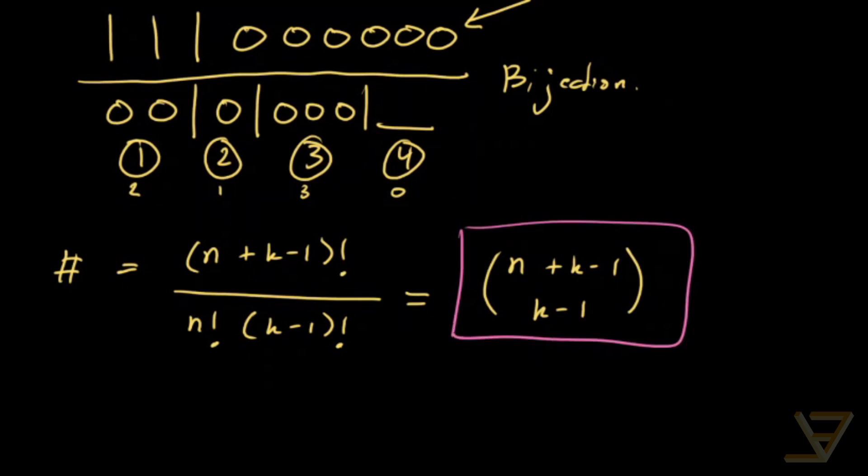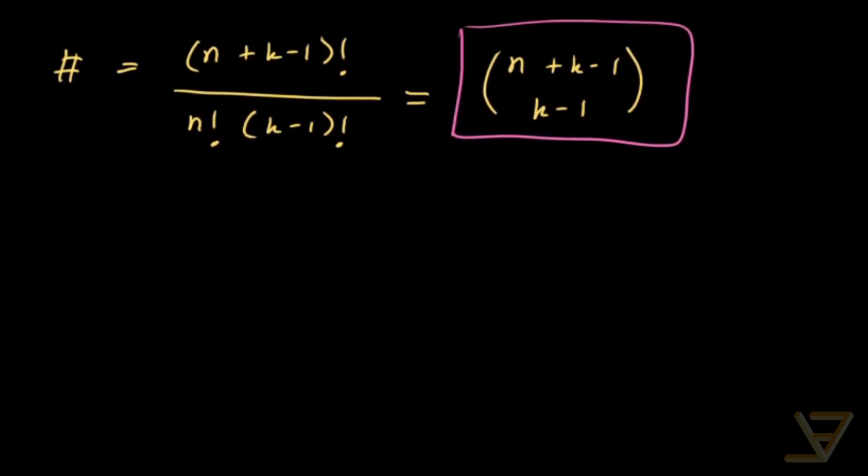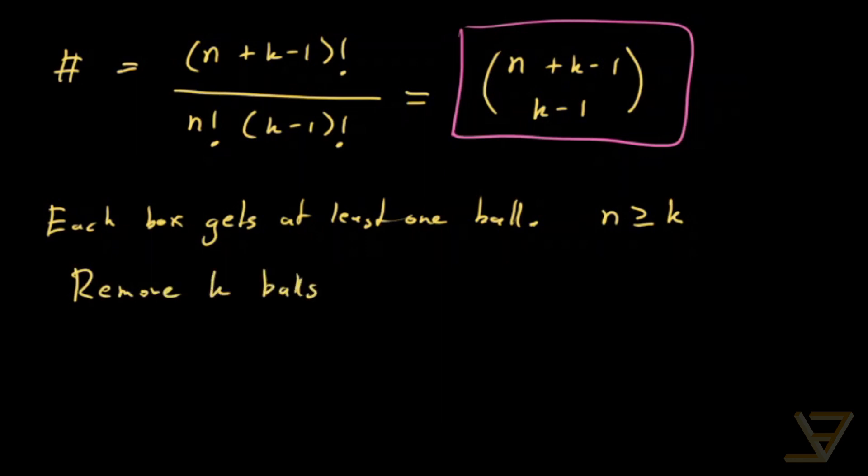The last thing I want to show you is the possibility that each box gets at least one ball. In that case, first of all, we need N is greater than or equal to K. So the number of balls exceeds the number of boxes. Otherwise, each box wouldn't get at least one ball.